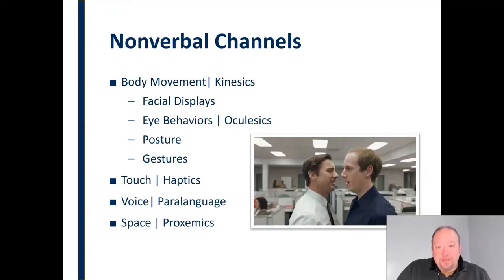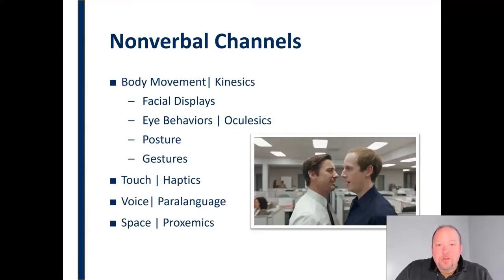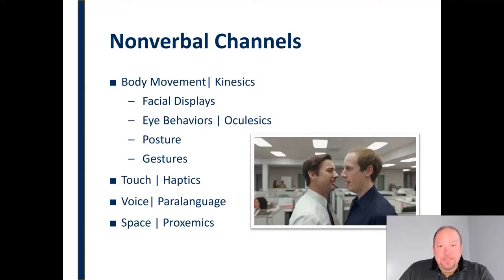The way we use space can communicate something. Somebody who feels comfortable getting closer to us communicates something about how they feel about that relationship. When somebody leans in and whispers in your ear, that's using space to indicate this is a private thing. The tone of their voice and the way they're using paralanguage also communicates that this is a secret — something only you should know. We know that from the nonverbal channels, without them even having to say 'don't tell anyone.' So the way we use space communicates something very significant.